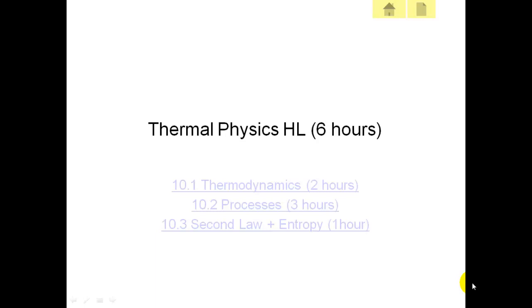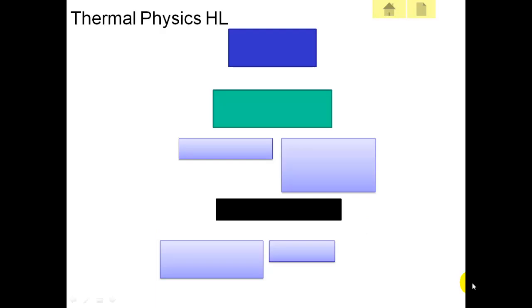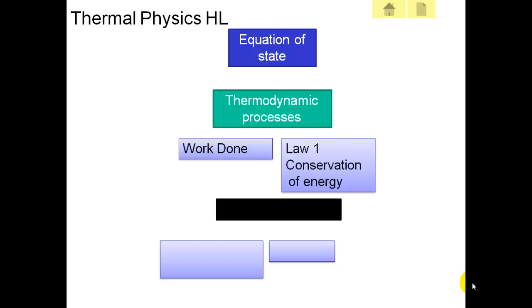Now we're going to look at thermal physics, which should take six hours of class time. We're going to start with the equation of state PV equals nRT. We're going to look at thermodynamic processes, which is basically looking at PV diagrams, looking at work done, defining work done, the conservation of energy. PV diagrams - we'll be doing a lot of those. And then we're moving on to the second law of thermodynamics, which is that heat goes from hot to cold. And then we'll finish with entropy.